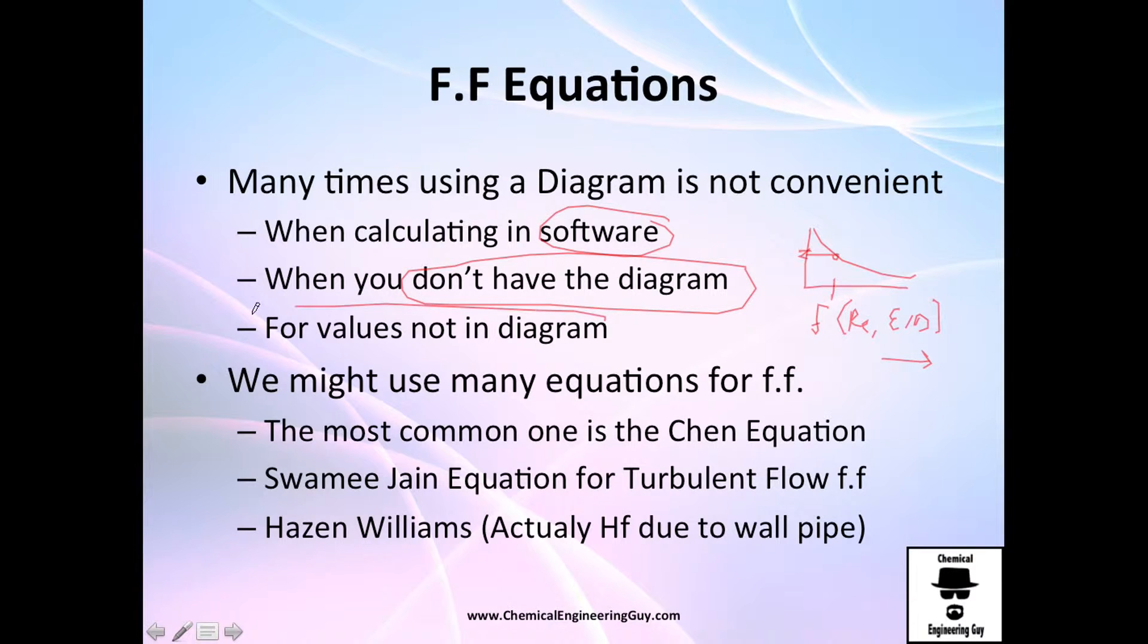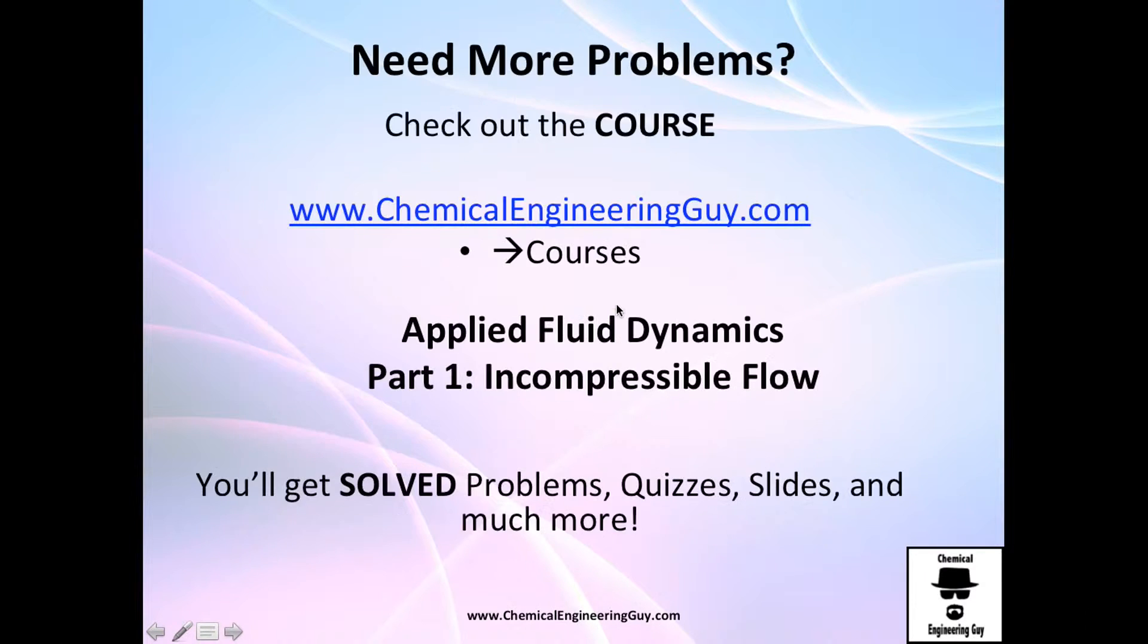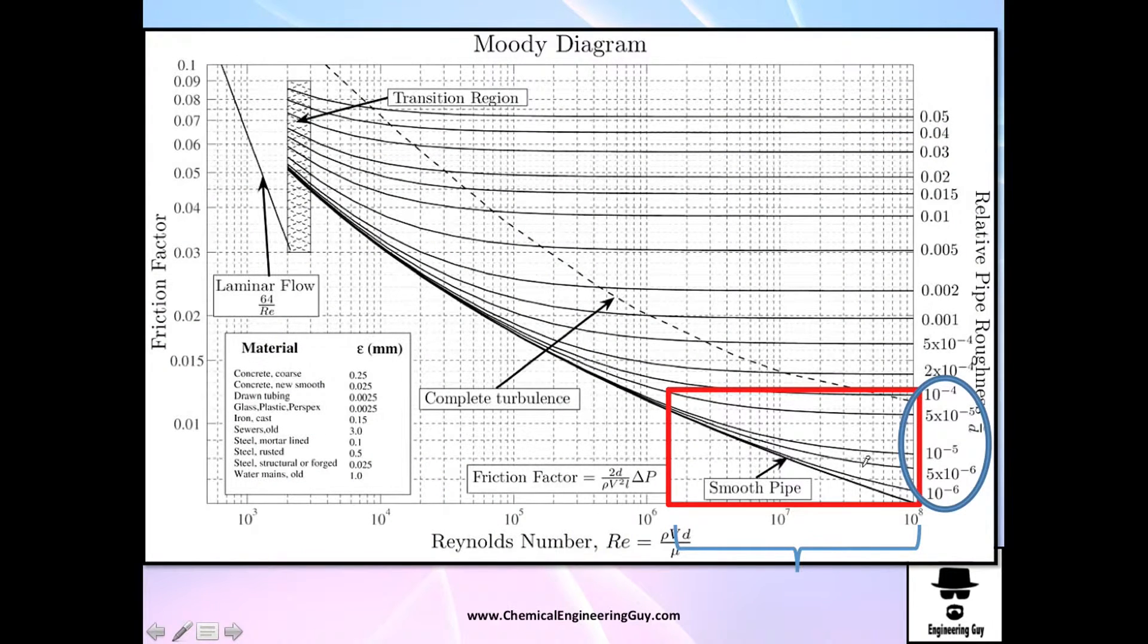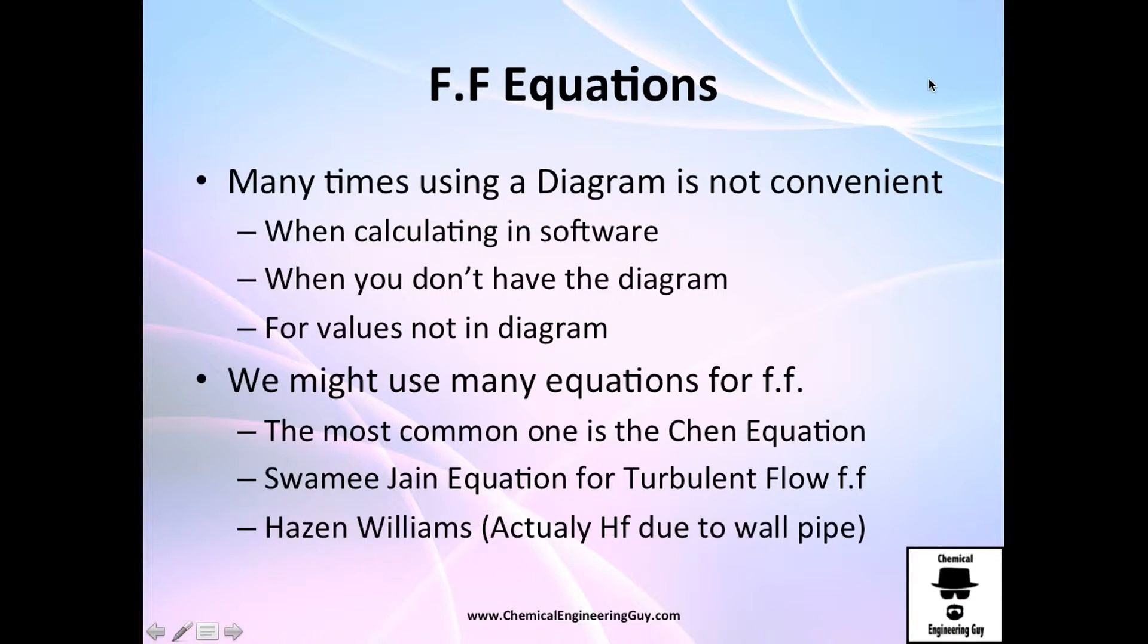And it's also good for values that are not in the diagram. For example, what will happen if I have 10 to the 9? You could say it's complete turbulent, no worries. But what will happen if you have a relative roughness of 0.10? You don't know it, so you could use this to model it.